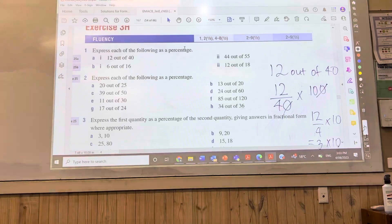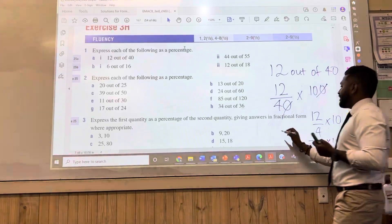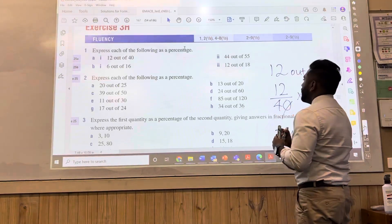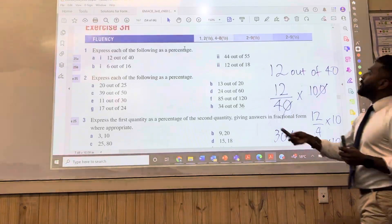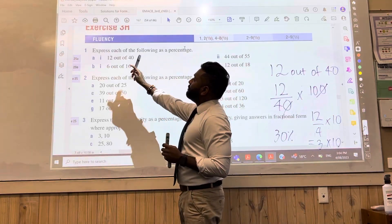3 times 10 is what? 30. So how do you write that as a percentage? 30%. Well done.